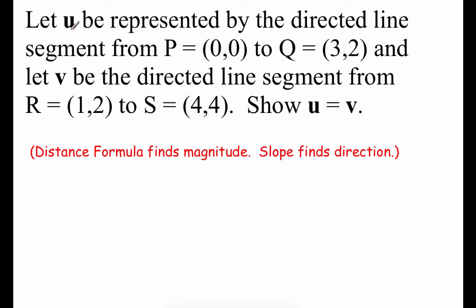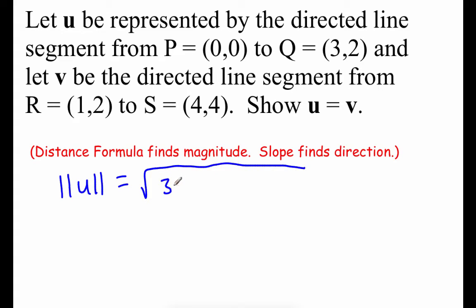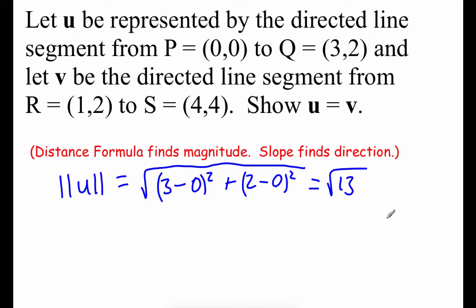Let's say we're dealing with two vectors. Vector U goes from initial point (0, 0) to terminal point (3, 2), and vector V starts at (1, 2) and ends at (4, 4). We're going to show these two vectors are equivalent by finding the magnitude of each using the distance formula and finding the direction by finding the slope. For the magnitude of vector U: square root of (x₂ − x₁)² + (y₂ − y₁)², which simplifies to the square root of 13. The slope of vector U is rise over run: two-thirds.